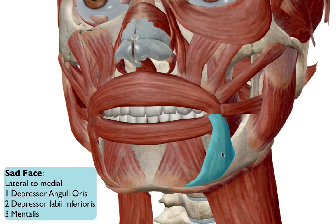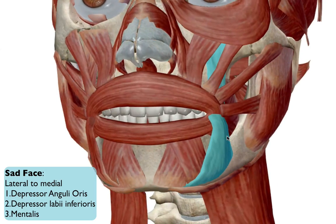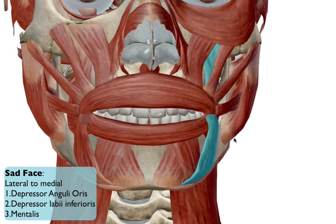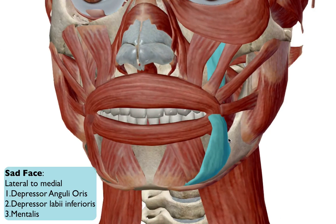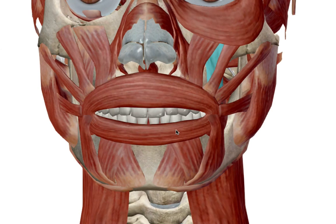Much like your levator anguli oris gives you the smile, the depressor anguli oris below it gives you the frown. So that's our muscles of facial expression. By no means is this a complete or exhaustive look, but it does give you an introduction to the muscles responsible for the facial expressions you have. A lot of these muscles, unlike other skeletal muscles, are not connected to bone but are connected to other muscles or to the skin via connective tissue — hence why they can manipulate the skin to give you these expressions. Good luck in your studying.